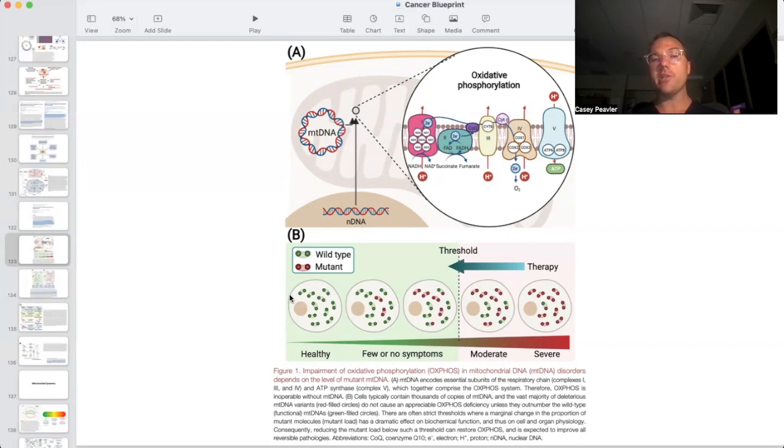So therefore, when we have all wild type situation, all greens, we have healthy colonies of mitochondria, we have a good redox balance, we have adequate ATP being produced, and the system is running smoothly. However, as these mutants start to take hold, we develop symptoms and more symptoms. And then at some point, we hit an energetic threshold, and we become diseased, or we develop a disease process that's able to be diagnosed by someone.